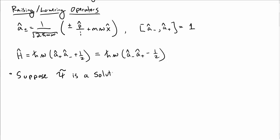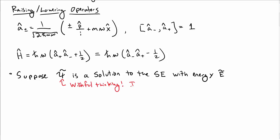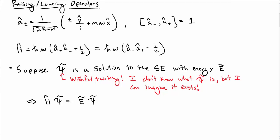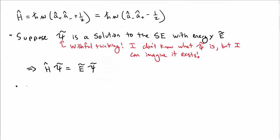Let's suppose ψ̃, just to call it something different, is a solution to Schrödinger's equation with some energy Ẽ. I'm just supposing this — just guessing that there is such a solution. This is, at the moment, very wishful thinking. We don't really have a solution, we don't know what solutions look like. We're just imagining this as a place to start, and then we'll see where it gets us.